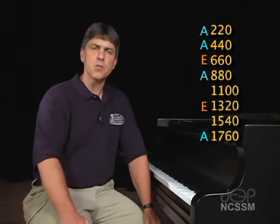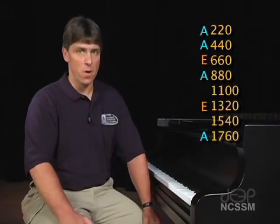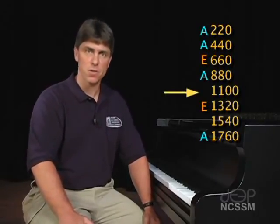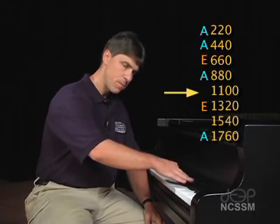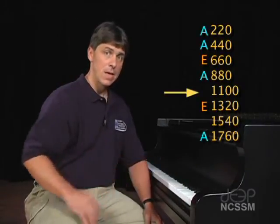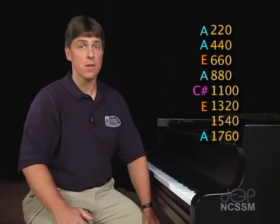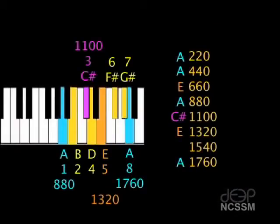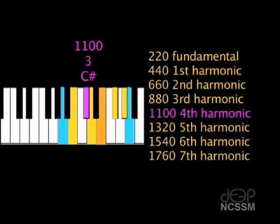Now, let's use some reasoning to figure out the fourth harmonic, 1100 hertz. If you guessed C sharp, you are correct. Remember that C sharp is the mediant of the A major scale, or the third note of the scale. The fourth harmonic, or fourth multiple of a fundamental, is always the third note of the major scale.